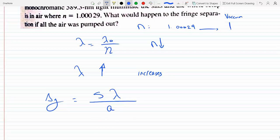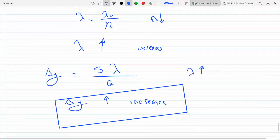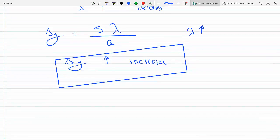So if lambda goes up, the separation delta y will go up. It increases. So this is the qualitative answer to this question.